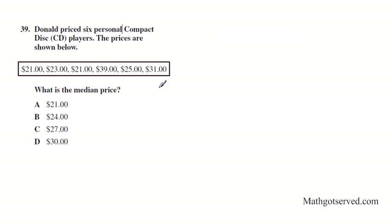It says Donald priced six personal compact disc players, the prices are shown below, what is the median price? So there are two ways of finding the median, or actually two categories for finding the median. If you have odd or even, there are two different ways of finding it.